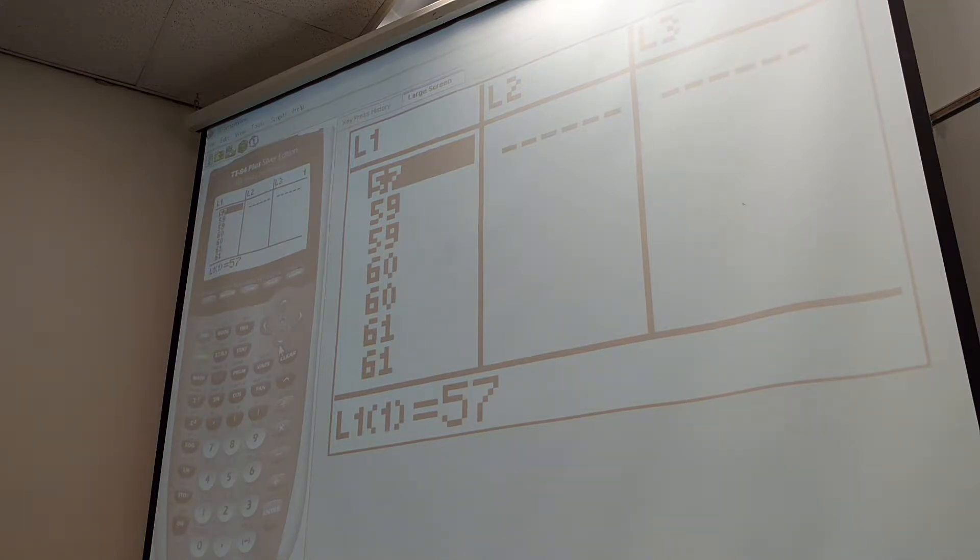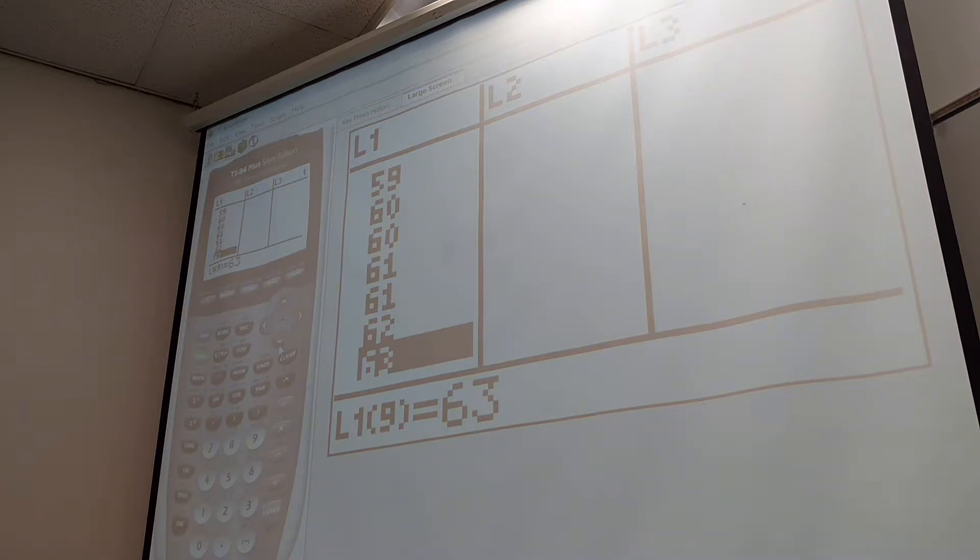Now, the frequency is not 60 minus 57 is 3, because then everything in the world would be this. Right? Right? Here's the distribution of heights. Everybody's saying, no. The frequency is how frequently you saw a data point show up in that class.